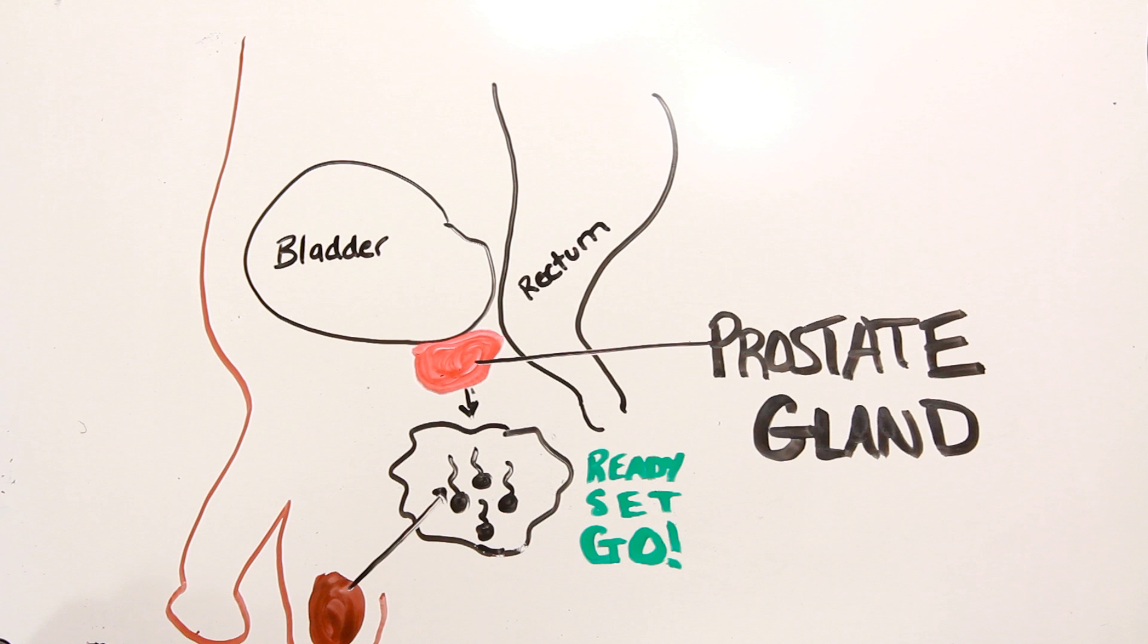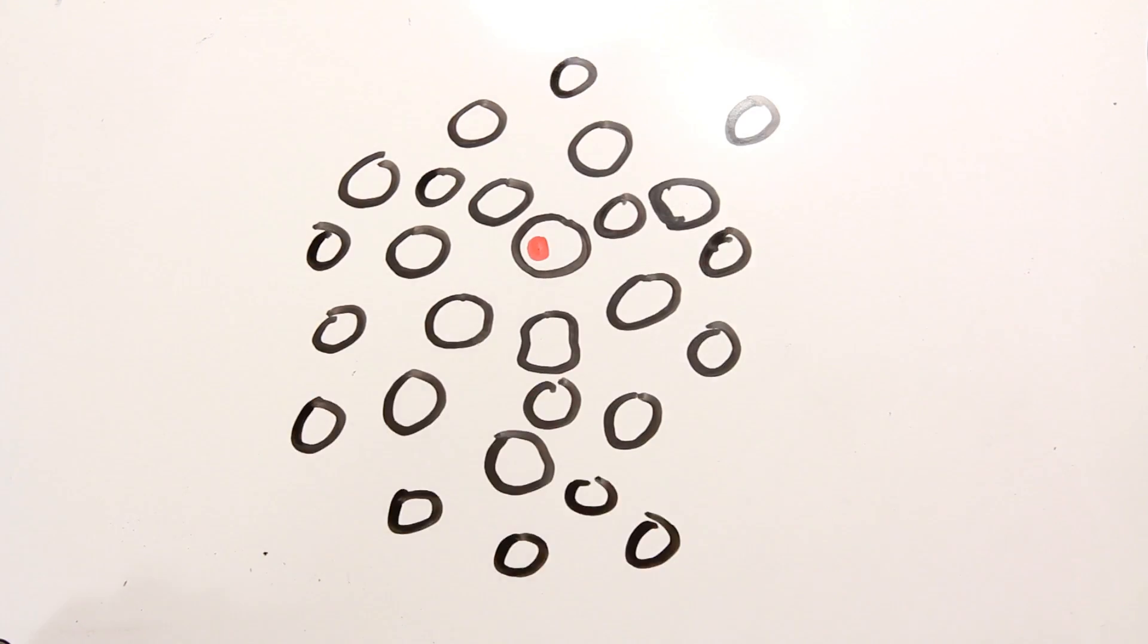But with time and age, the cells in the prostate, like any other cells, can pick up defects which lead to cancer. Now, your body and everything in it, including the prostate, is made up of cells.